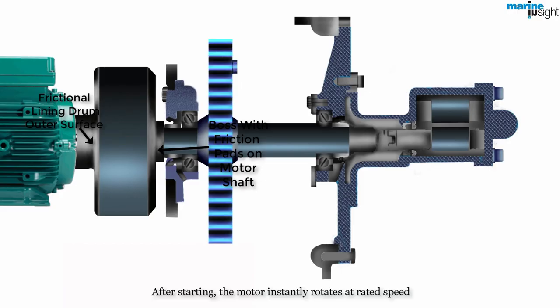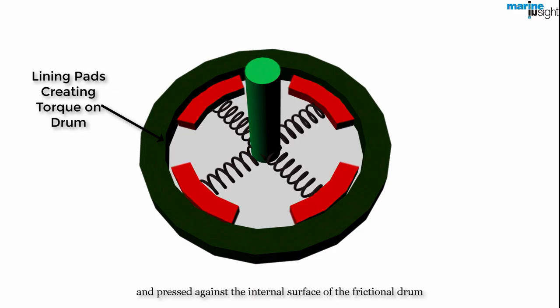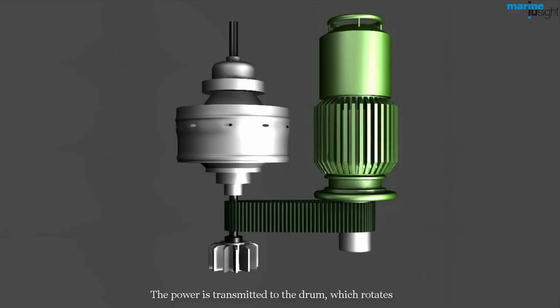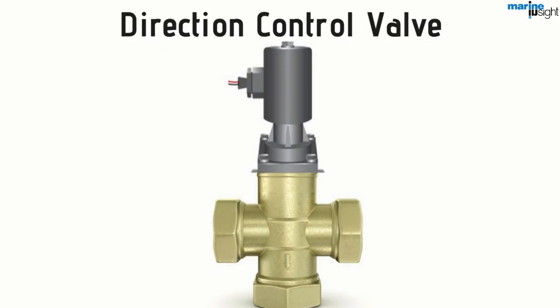After starting, the motor instantly rotates at its rated speed. The centrifugal force makes the frictional lining pads go outwards and pressed against the internal surface of the frictional drum. The power is transmitted to the drum, which rotates the separator bowl as the drum and lining pads slip together. The bowl would typically attain its full speed in 2 to 5 minutes, depending upon the make of the centrifuge separator.